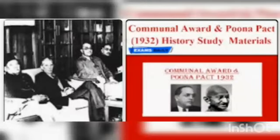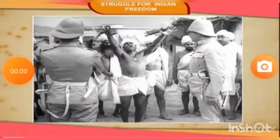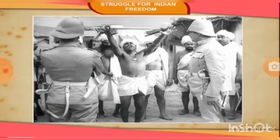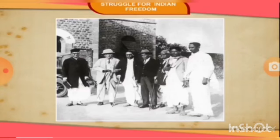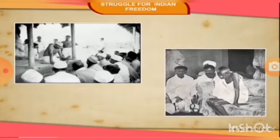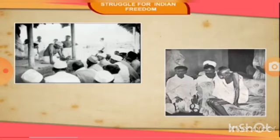Communal Award and Poona Pact: On 16th August 1932, Ramsay MacDonald announced the Communal Award. It provided separate electorates to the minorities, which included Muslims, Sikhs, Indian Christians, Anglo-Indians, women, and depressed classes. B.R. Ambedkar, the leader of the depressed class, strongly argued for the separate electorate as, according to him, it would give them political representation and power.